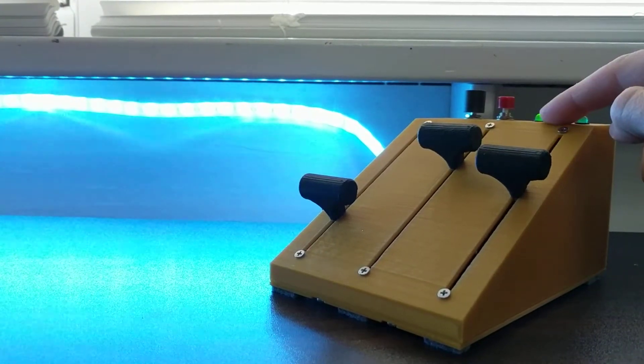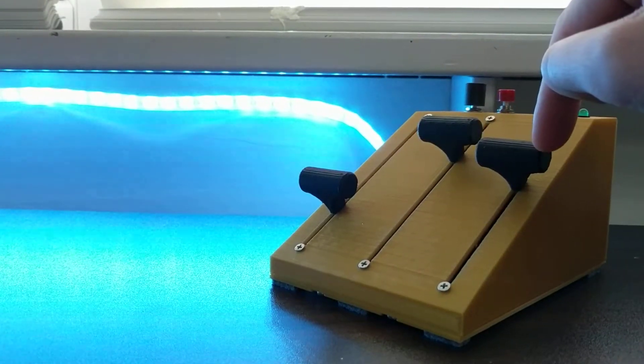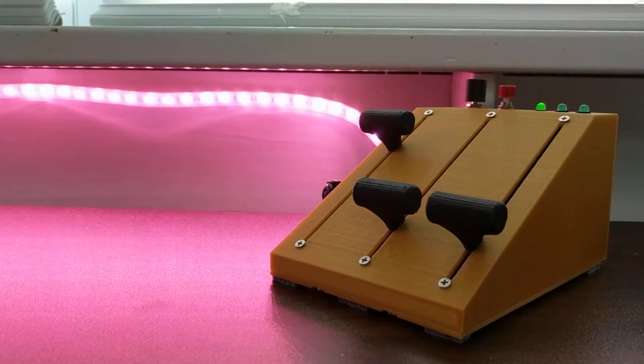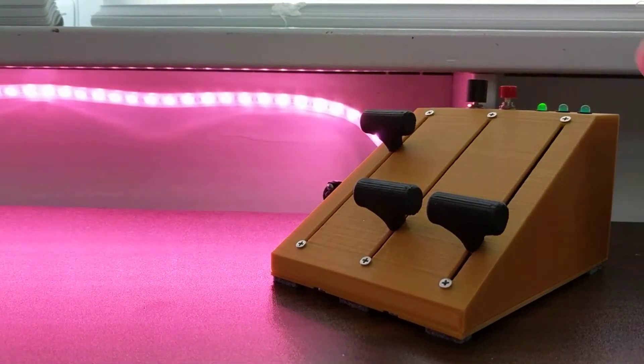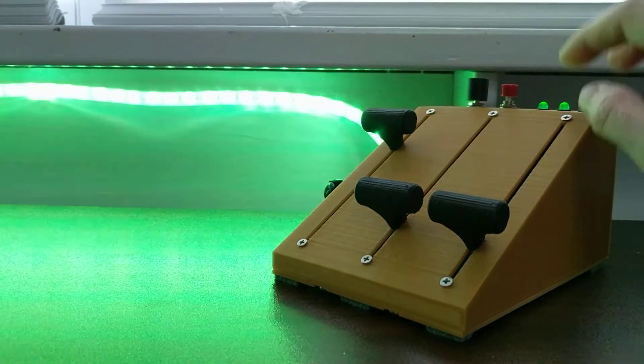Mode number one is just RGB, so the sliders basically determine the brightness of each color. So if I want to go to red, I just dial the other colors down.